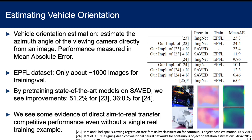We also tried using SAVED for the task of vehicle orientation estimation using the publicly available EPFL dataset. We show that by simply taking state-of-the-art models and pre-training them on our data, we see large improvements, even decreasing the error rates by 50%.